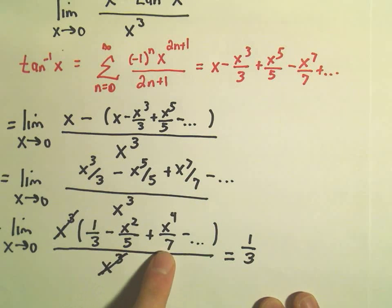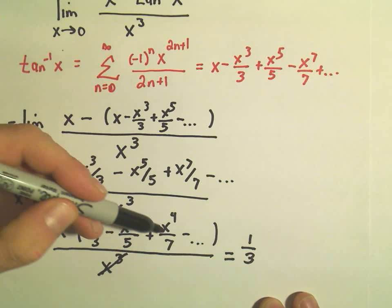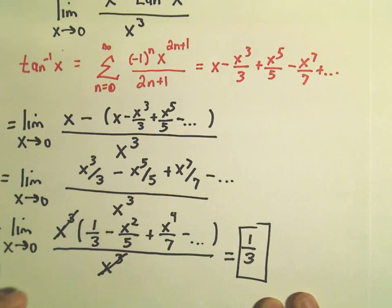We'll get minus 0, plus 0, minus 0, plus 0 when I plug in 0's for all the other x's. So that's our answer, just 1/3.